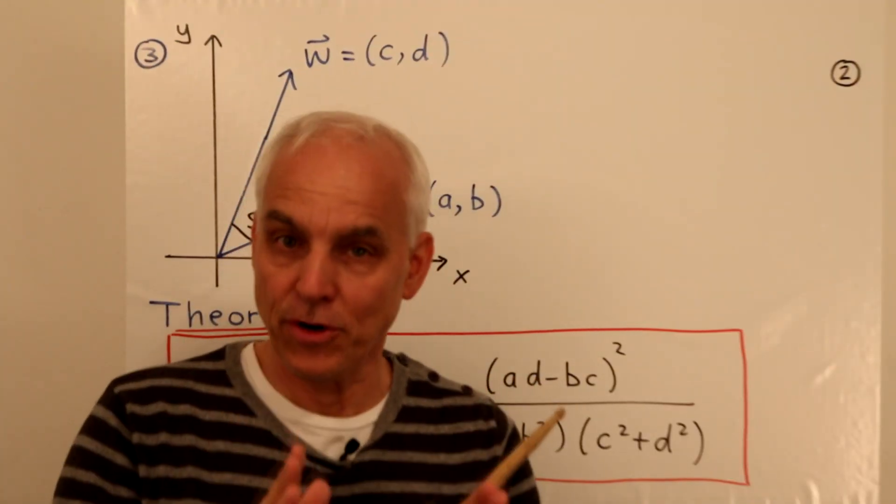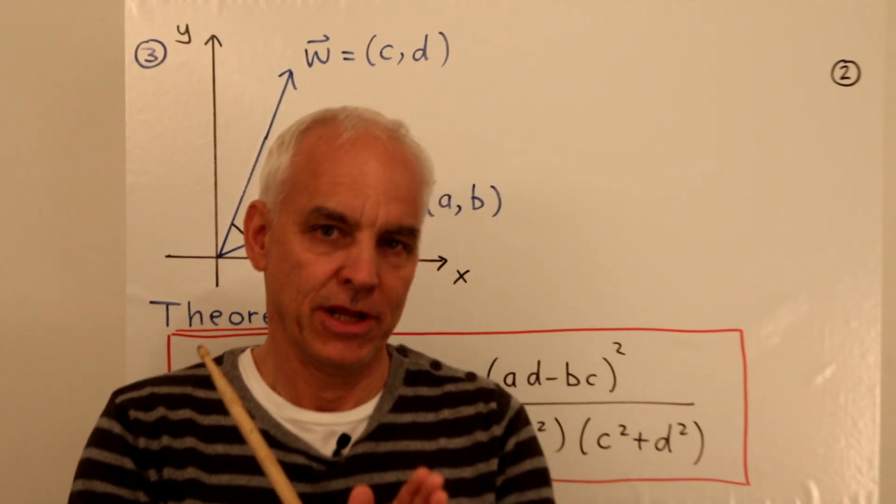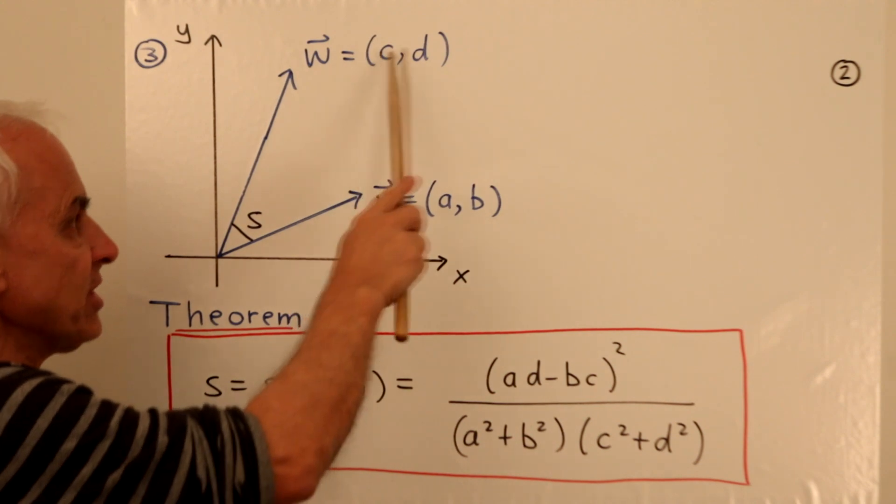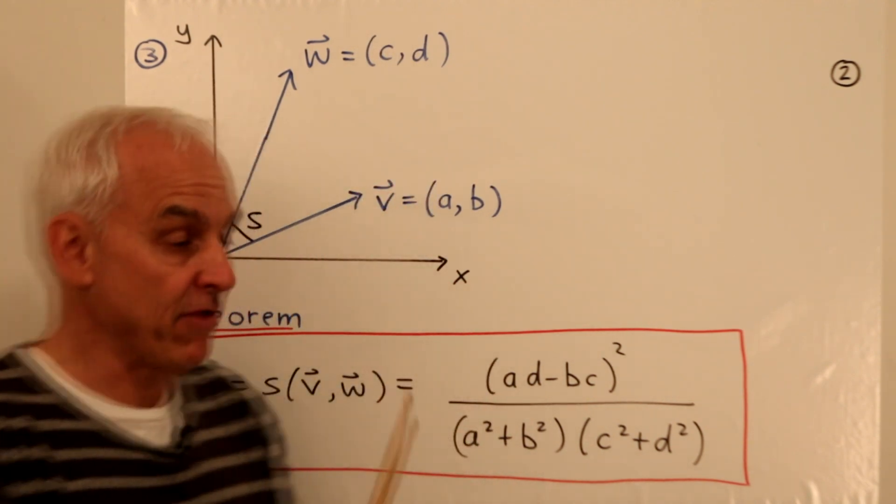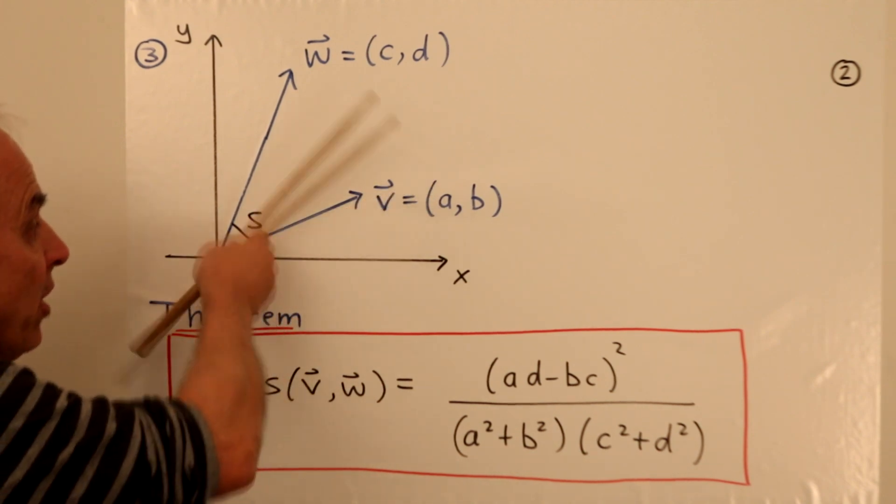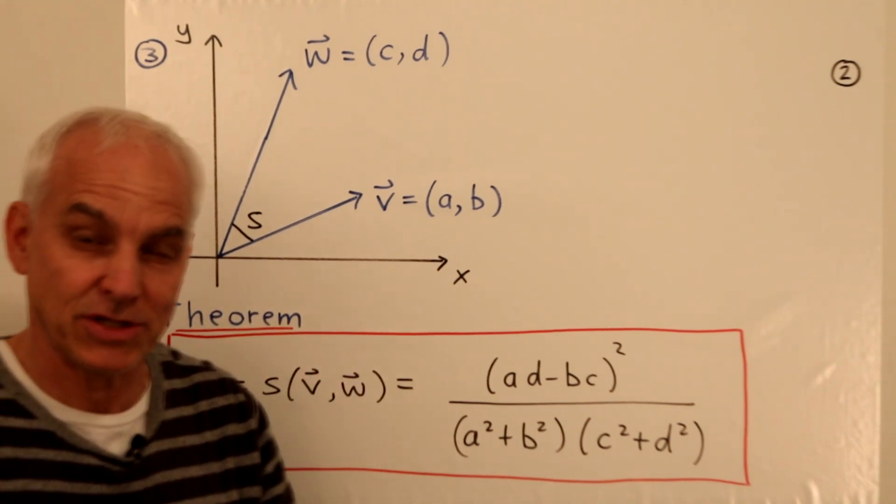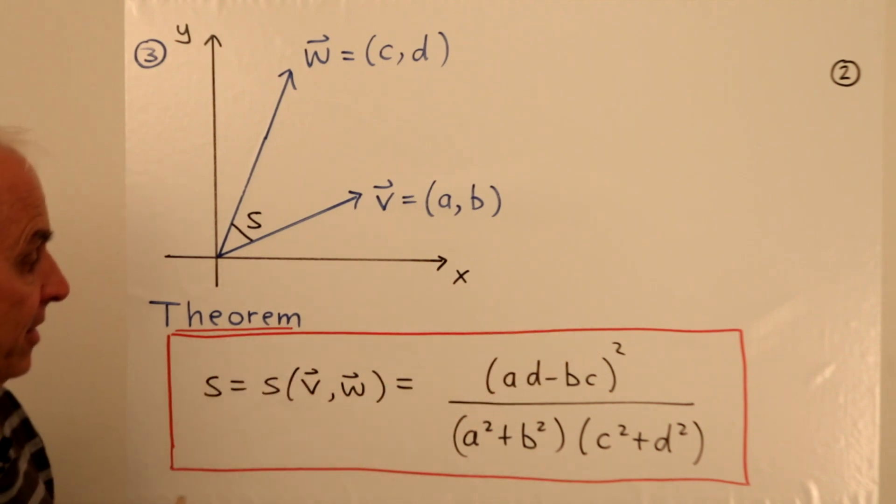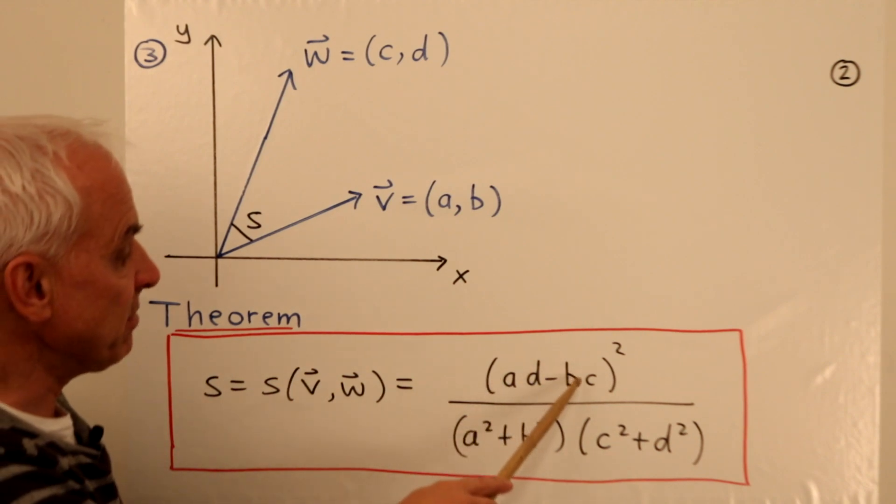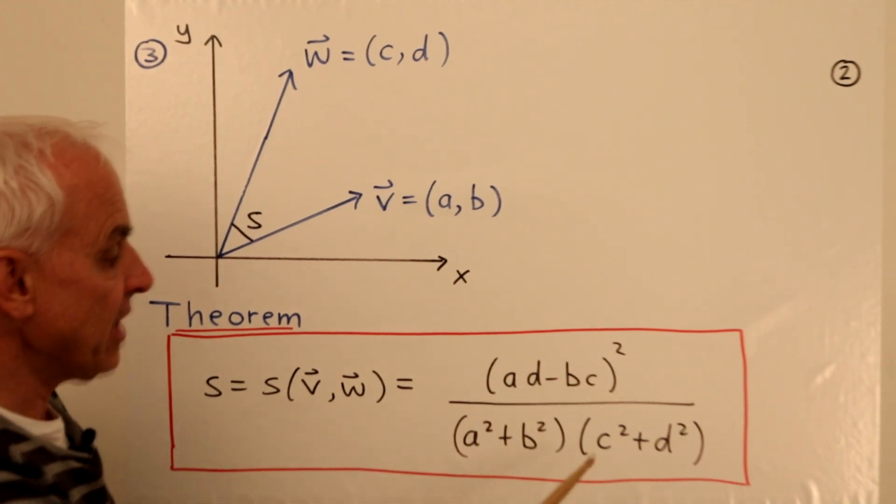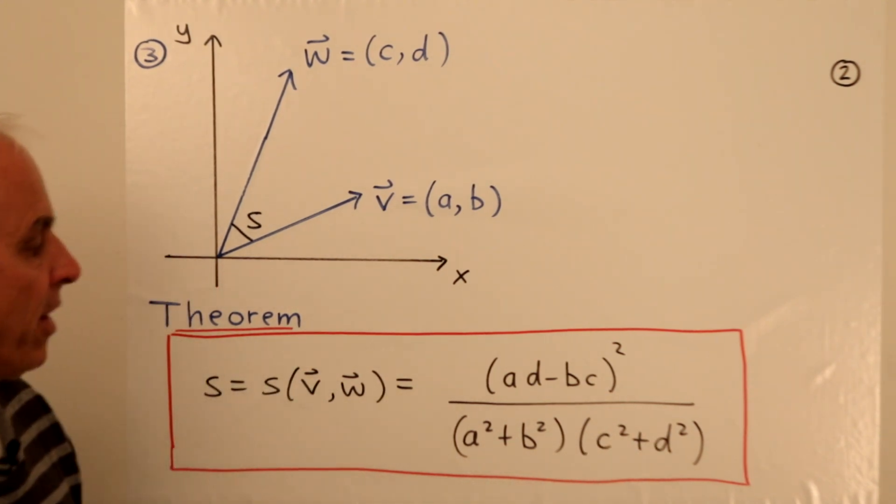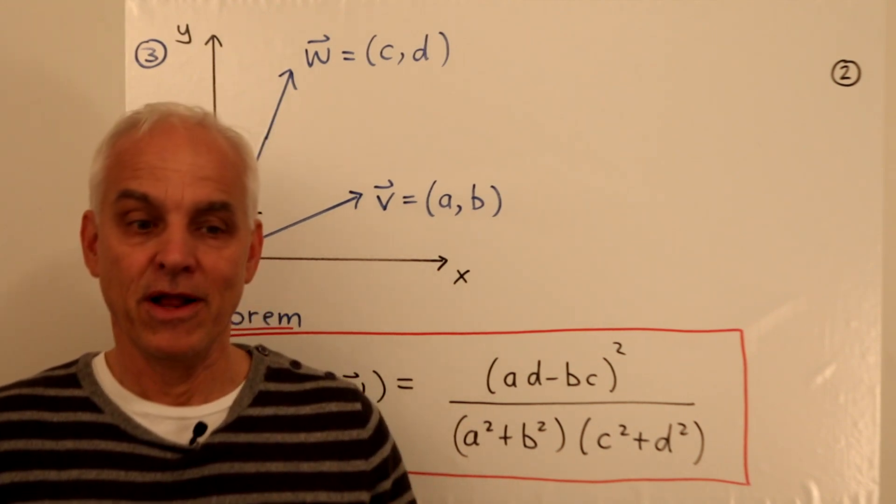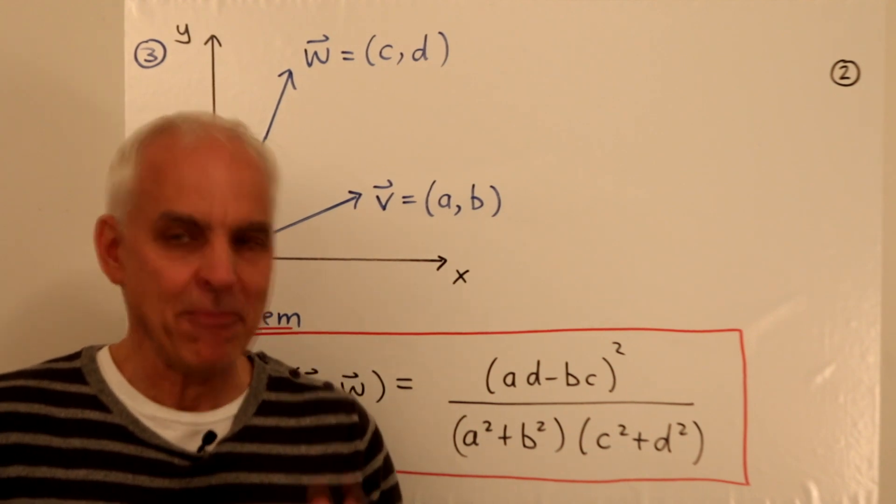Now today we want to concentrate on a third understanding of the spread, which is a vector interpretation. So we now suppose that we have two vectors in the plane, V, which is AB, and W, which is CD. If we translate these vectors, we can have them both emanate from the origin. And those two vectors are then going to determine a spread. There's going to be a spread between those two vectors. And we want a formula for what that spread is in terms of the coordinates of the vectors. And here is the result that the spread between V and W is AD minus BC squared over A squared plus B squared times C squared plus D squared. So that's a formula for the spread between two vectors. And it has a very similar formula to the formula that we saw for the spread between two lines. In fact, it's almost the same. And we're going to see why that is.